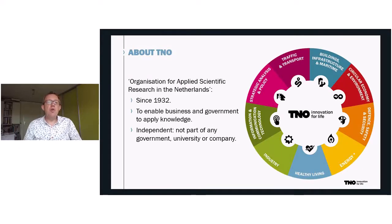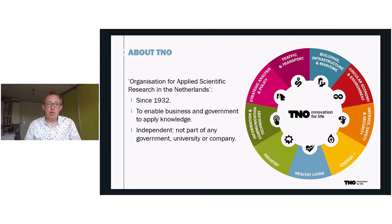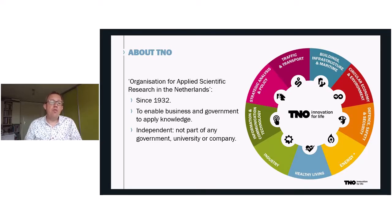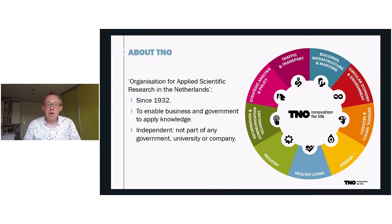TNO stands for the Netherlands Organization for Applied Scientific Research. It was founded by law in 1932 to enable business and government to apply knowledge. As an organization regulated by public law, we are independent — not part of any government, university or company. TNO stands for efficient innovation. We don't do that alone, but with companies, government and a whole range of organizations together. Through collaboration, we create innovations that sustainably strengthen the competitiveness of companies and the well-being of society. We develop knowledge not for its own sake, but for real applications.